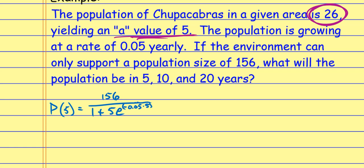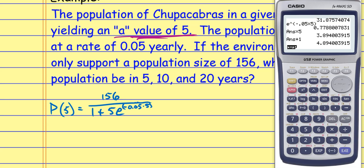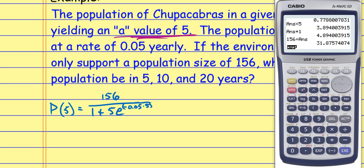When you plug this into the calculator, you need parentheses — the entire denominator in parentheses, and the exponent in parentheses as well. I prefer to take order of operations into my own hands: I'll calculate E to the negative 0.05 times five first, then multiply by five, add one, and divide 156 by that answer. I get 31.875, so about 32.